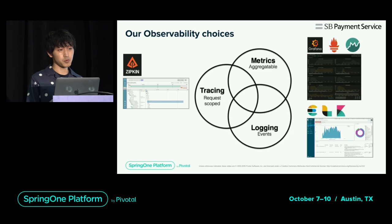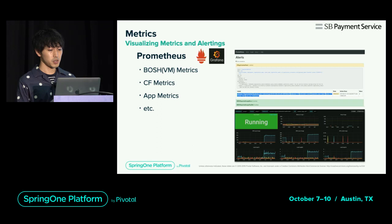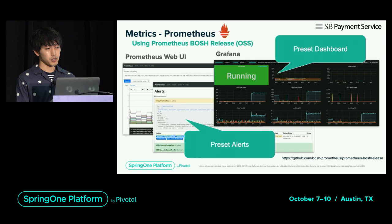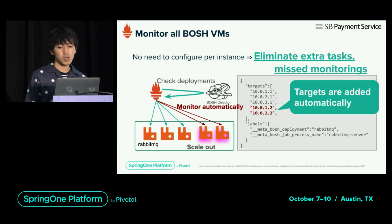Prometheus and Grafana are used as monitoring tools to visualize metrics and threshold alerts. Prometheus is managed by BOSH — we are using the community BOSH release. Alerts and dashboards suitable for BOSH Cloud Foundry are preset. The first advantage of the BOSH environment is VM scale-out. For example, if you scale out an instance of RabbitMQ, Prometheus regularly monitors BOSH information, so it automatically detects a new instance and automatically sets it as the monitoring target. Setting up per instance is not necessary, so tasks are reduced and there is no worry of missing monitoring.